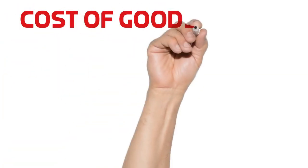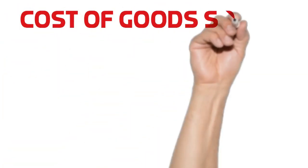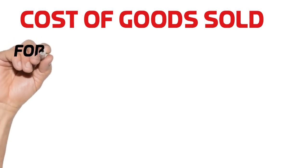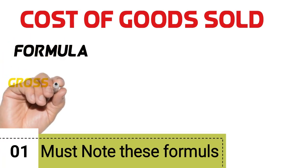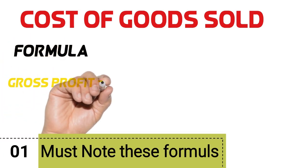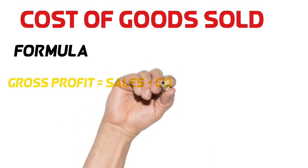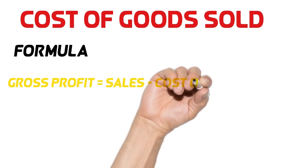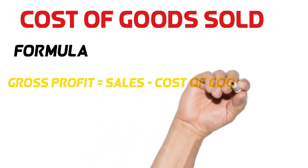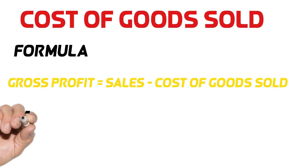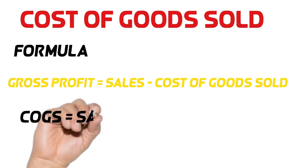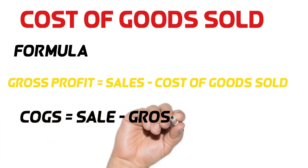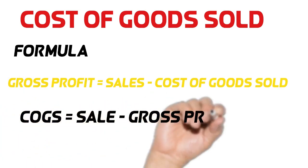We have a lot of formulas to find cost of goods sold. I will discuss them with you one by one. Gross profit is equal to sales less cost of goods sold. Sometimes we use this formula to calculate the cost of goods sold — cost of goods sold is equal to sales less gross profit.